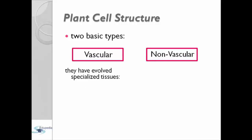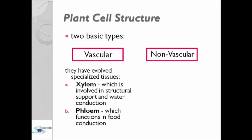Vascular have evolved specialized tissue such as xylem and phloem. Xylem is involved in structural support and water conduction while phloem is for food conduction.